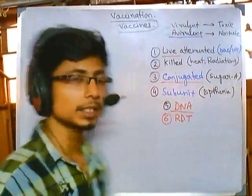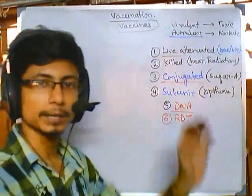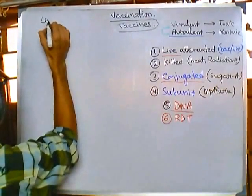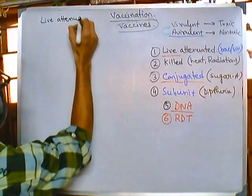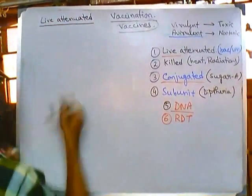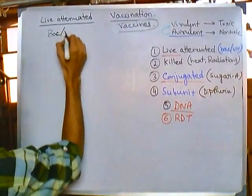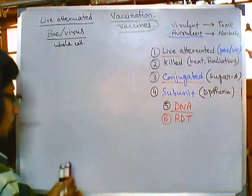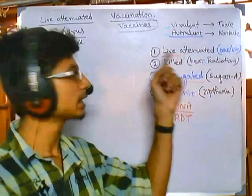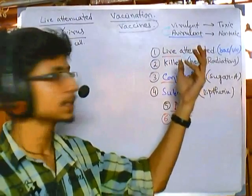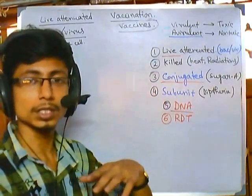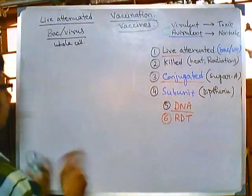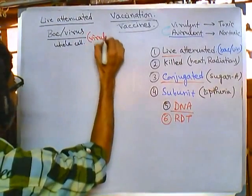We are talking about vaccination. Let's take the example of a live attenuated type of vaccine. This type of vaccine is generated using the whole cell — we take the whole bacteria or virus. They are designed in such a way that they cannot grow inside us but they can grow in other hosts. They are host-specific, so you modify them using host specificity. They are virulent in their natural host, but we need to make them avirulent for us.